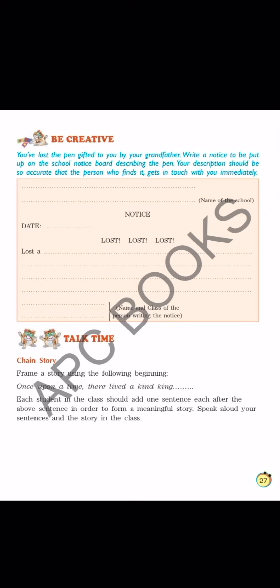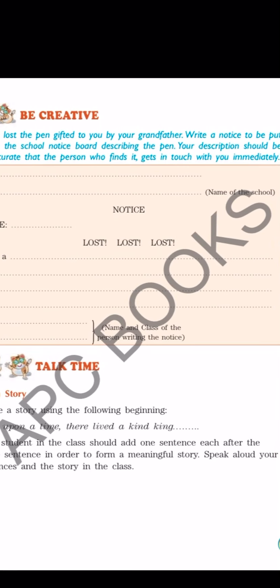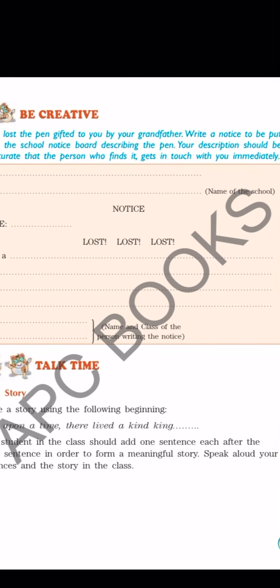Then the fourth line - you will write the title of the notice: 'LOST'. That is the title of the notice. It can be anything - if you are writing a notice that you have found a watch and you are informing others to come and collect it, then it would be 'FOUND'. Right now you are writing a lost notice because your watch or whatever thing has been misplaced.